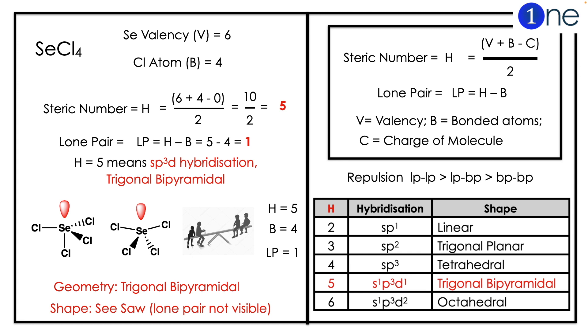To find the hybridization, you should know the steric number formula: H equals (V plus B minus C) divided by 2.